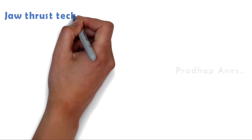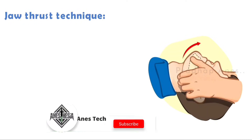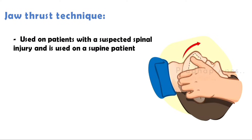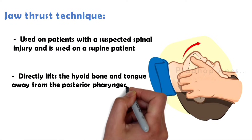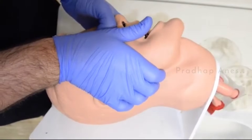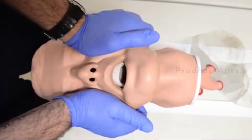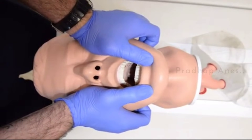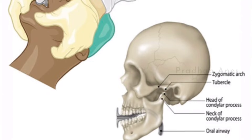Next, we'll see the jaw thrust technique. The jaw thrust is a technique used on patients with a suspected spinal injury and is used on a supine patient. The jaw thrust maneuver more directly lifts the hyoid bone and tongue away from the posterior pharyngeal wall. It is performed by placing two or three fingers behind the angle of the mandible and pushing the jaw anteriorly. The rescuer may also place their thumbs gently over the cheeks to assist in pushing the jaw forwards. It is very important that when performing the jaw thrust, the rescuer places their fingers over the bony prominences of the mandible, and not soft tissues, because applying sustained pressure to the soft tissues of the neck and/or jaw could lead to trauma.